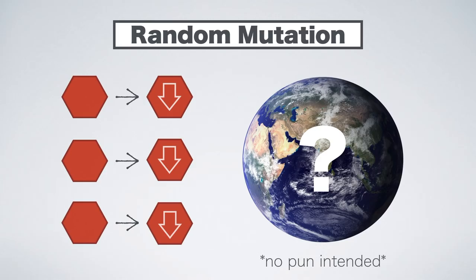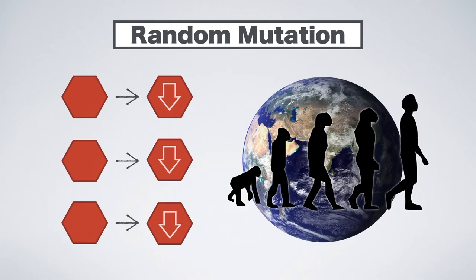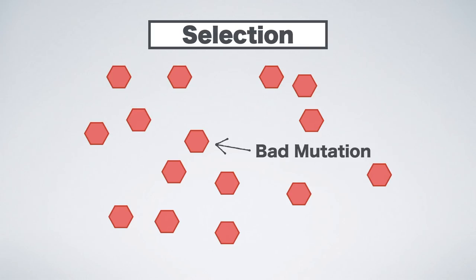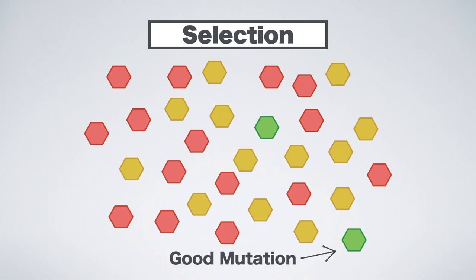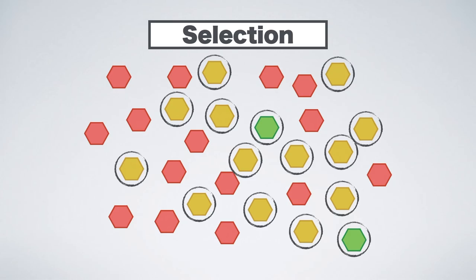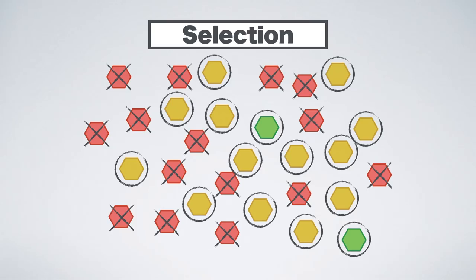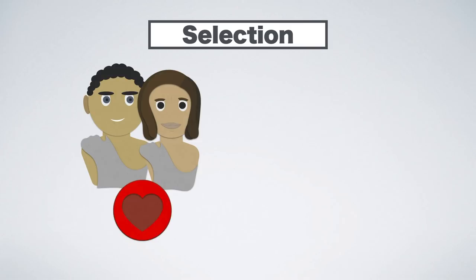Then how on earth did random mutation help us evolve our way up the hierarchy towards world domination? The answer is selection. While most mutations produce very slight disadvantages, some mutations are benign and some randomly produce slight advantages. All you need to do is choose the best and discard the rest — and nature is doing just that. In our evolutionary history, there have been two great selectors: mating and death.